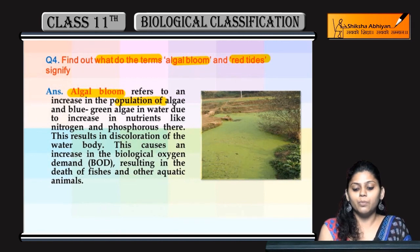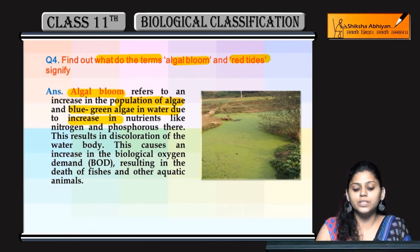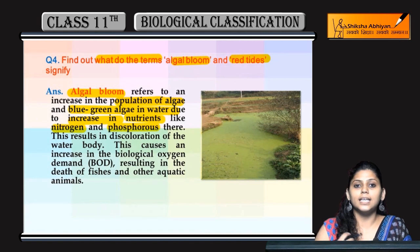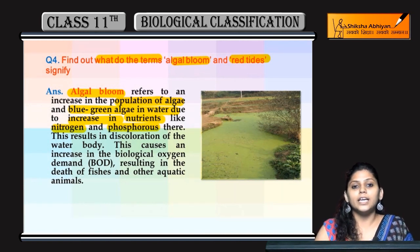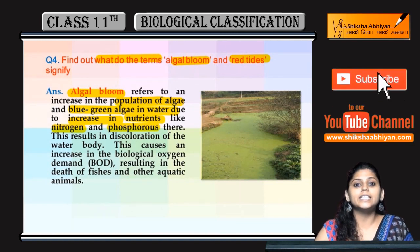The population of algae and blue-green algae in water increases because of some nutrients. When nutrients like phosphorus or nitrogen become excessive in a water body, the growth of algae also increases. As the algae grow and then die, some microbes present in the water degrade this organic matter.